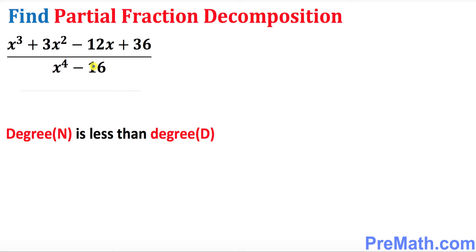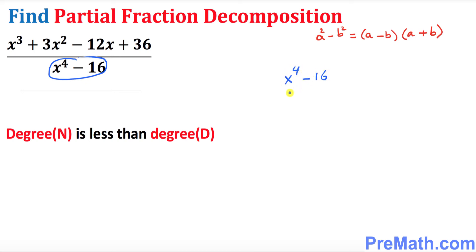Now let's focus on the denominator. We're going to factor it out — it can be easily factored using the difference of two squares formula. So let's put down x to the power 4 minus 16. I'm going to write that as x squared, all squared, minus 4 squared, which is the same as 16.